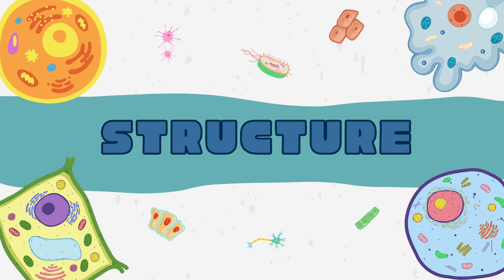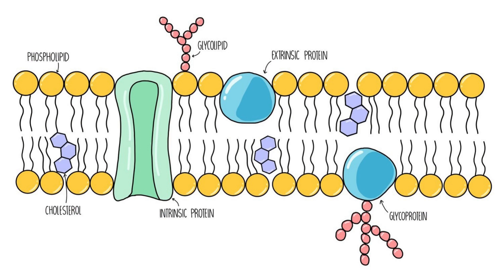The structure of the cell membrane is elucidated through the fluid mosaic model, a concept that portrays this crucial biological membrane as a highly dynamic and flexible structure. Central to this structure is the phospholipid bilayer, serving as the foundational component of the cell membrane. Comprising phospholipids arranged in a bilayer, the hydrophilic heads orient themselves outward, facing the surrounding aqueous environment, while the hydrophobic tails are positioned inward, shielded from water. Additionally, integral and peripheral proteins are intricately dispersed within and on the surface of this phospholipid bilayer, contributing significantly to the membrane's functions.